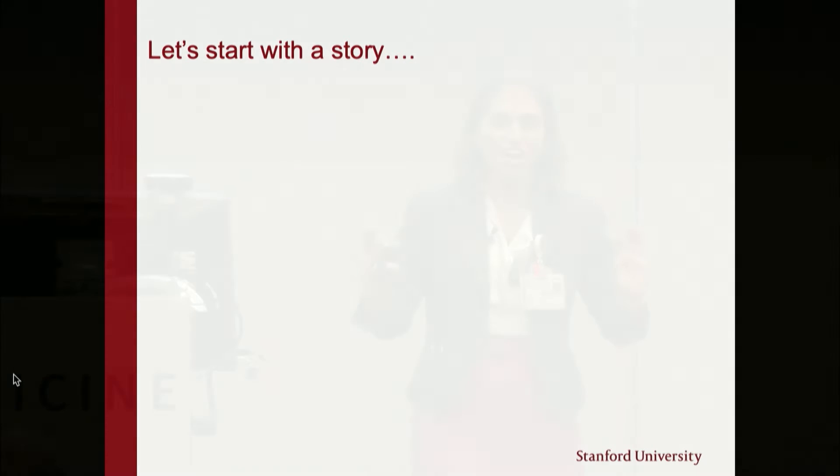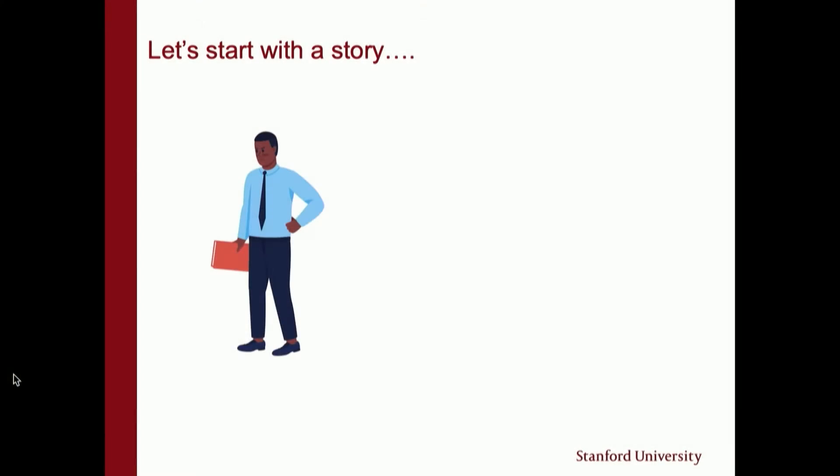We're going to talk about a background on Myasthenia Gravis. Let's start with a story. Here we have Bill. He looks kind of cranky, but he's a pretty nice, happy guy. He's 45, he's married, he's got two kids. He's at his job and had a little bit of a tough meeting, so that's why he looks a little upset.